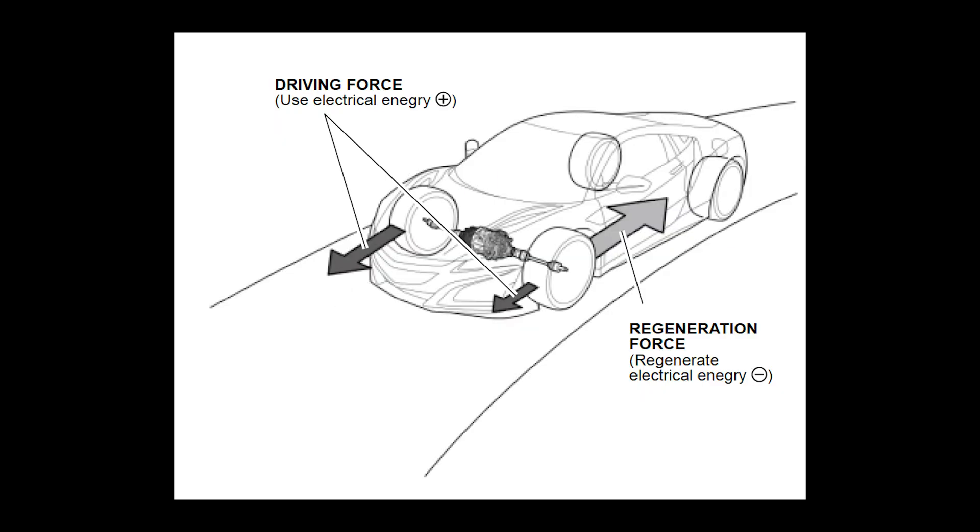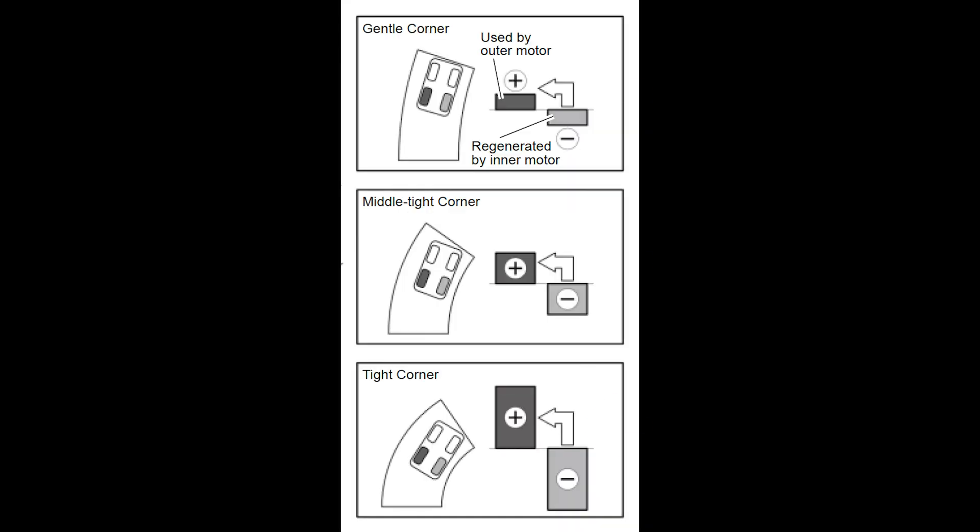The front motors are twins, and each controls one of the front wheels. The twin motor unit generates a yaw moment between the inner and outer wheels during cornering. It achieves this by controlling the deceleration force for the inner wheel and the driving force for the outer wheel, and it then uses the electrical kinetic energy from the deceleration of the inner wheel to drive the outer wheel.